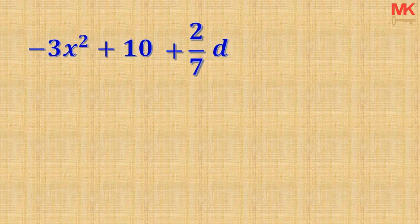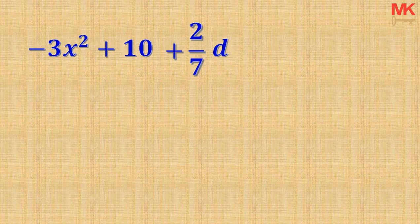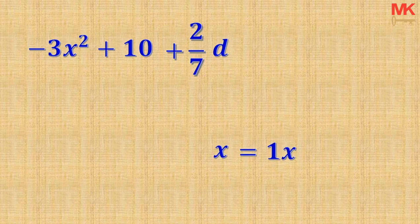Finally, take note: when a letter stands alone — without any number, without any operation — we have to understand that there is a positive operation in front of that letter and there is a constant coefficient of 1 in front of that letter. For instance, the letter x can be written as 1x, and it can in turn be written as positive 1x.